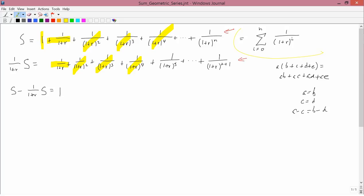So you get a whole bunch of cancellations. What you end up with is 1 and then minus 1 over 1 plus R to the N plus 1 because that doesn't have anything to cancel it. But everything else has something to cancel.